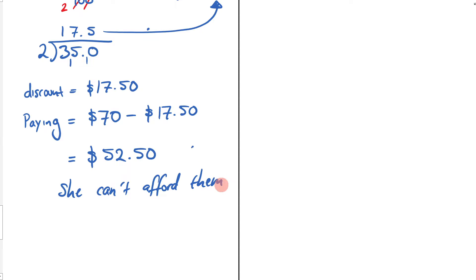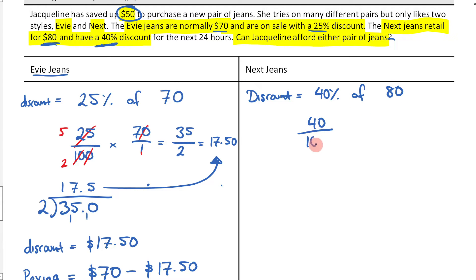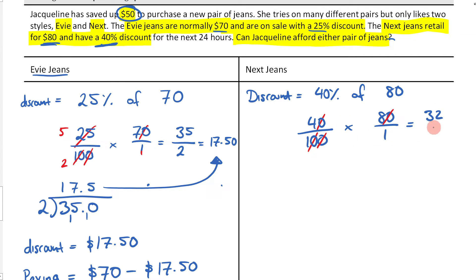Let's see if she can afford the other pair of jeans, following the same process. This time it's $80 and she gets a 40% discount. To figure out the discount, we need to find 40% of $80. That's 40 over 100 times by 80 over 1. This 0 cancels with that 0, that 0 cancels with that 0, leaving us with 4 times 8 is 32 and 1 times 1 is 1. So her discount is equal to $32.